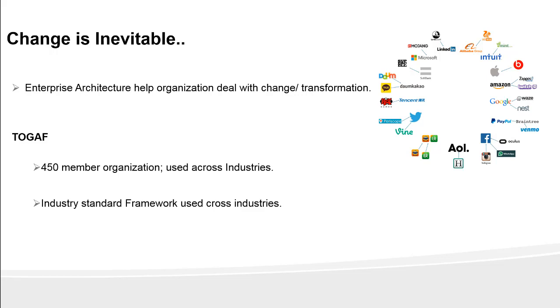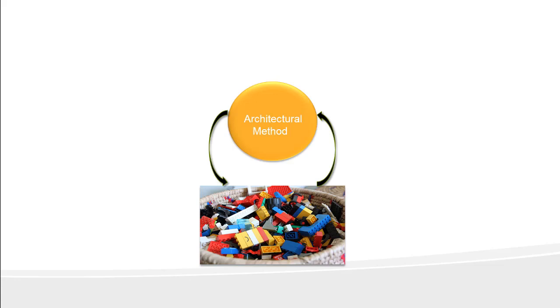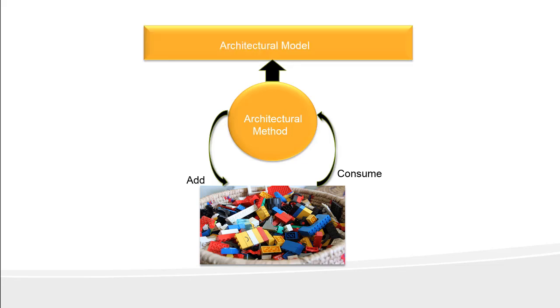How does TOGAF work? Think of a Lego box as a set of building blocks for an enterprise, storing architectural and solution artifacts created in the organization. Using the TOGAF framework, we go through a method of developing architecture called ADM — Architecture Development Method — which is the core component of TOGAF. We add or consume building blocks to create architecture models for the organization. The repository that holds these building blocks is called the Enterprise Continuum. So TOGAF is about a framework with building blocks in the Enterprise Continuum, a method (ADM), and an architecture model. It provides tools and guidance, and essentially contains a container, method, and deliverables.